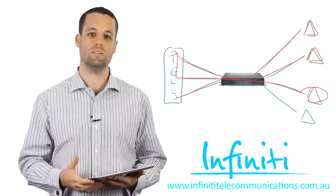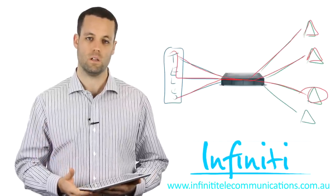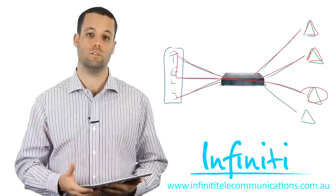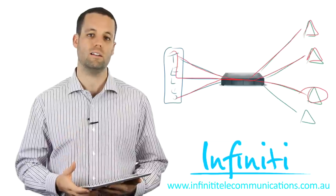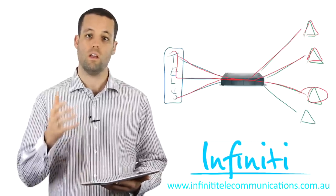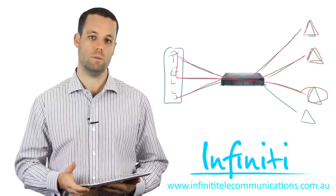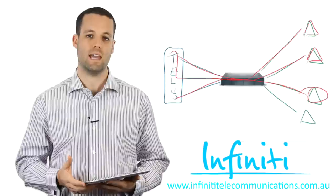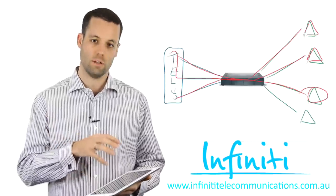Now the issue is that all three of your phone lines are actually in use. A big question we often get asked is: what happens if a fourth person tries to call your business when all of your phone lines are currently in use? Well, if you've only got three lines and they're all busy and a fourth person calls your business, they're going to get an engaged signal because there's no way for the carrier to get that fourth phone call into the phone system.